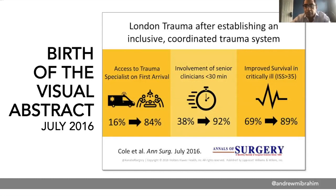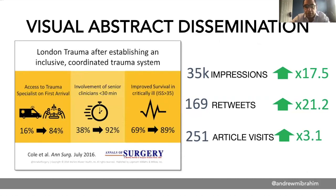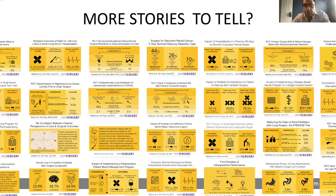This is the first visual abstract, created almost four years ago. London trauma — after establishing an inclusive coordinated trauma system: access to a specialist on first arrival went from 16% to 84%, involvement of a senior clinician in the first 30 minutes went from 38% to 92%, and improved survival for critically ill patients went from 69% to 89%. In just a few seconds you get the main headline findings of the paper. In the first two weeks after sharing it as a visual abstract on social media, it got seen 35,000 times, 169 people went on to share it, and the article got read and downloaded almost three times as often.